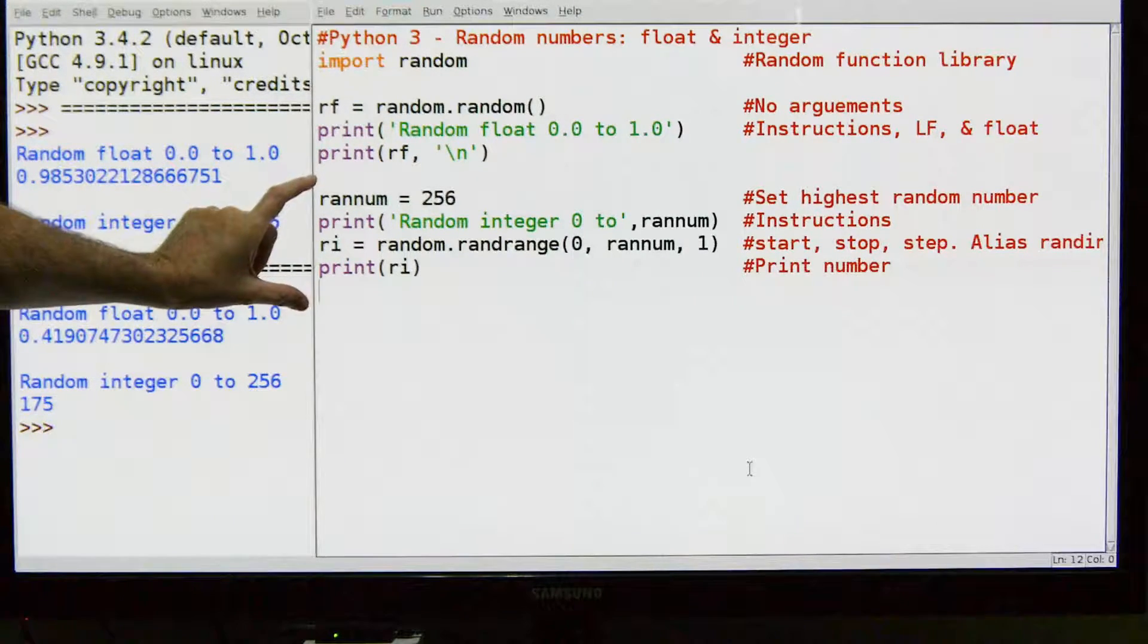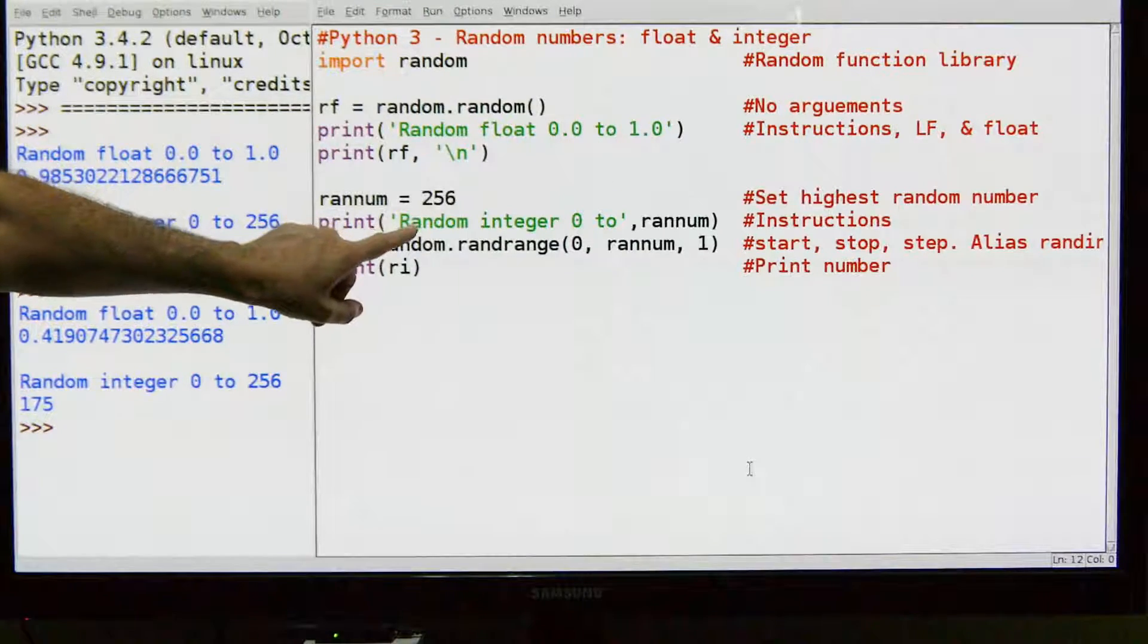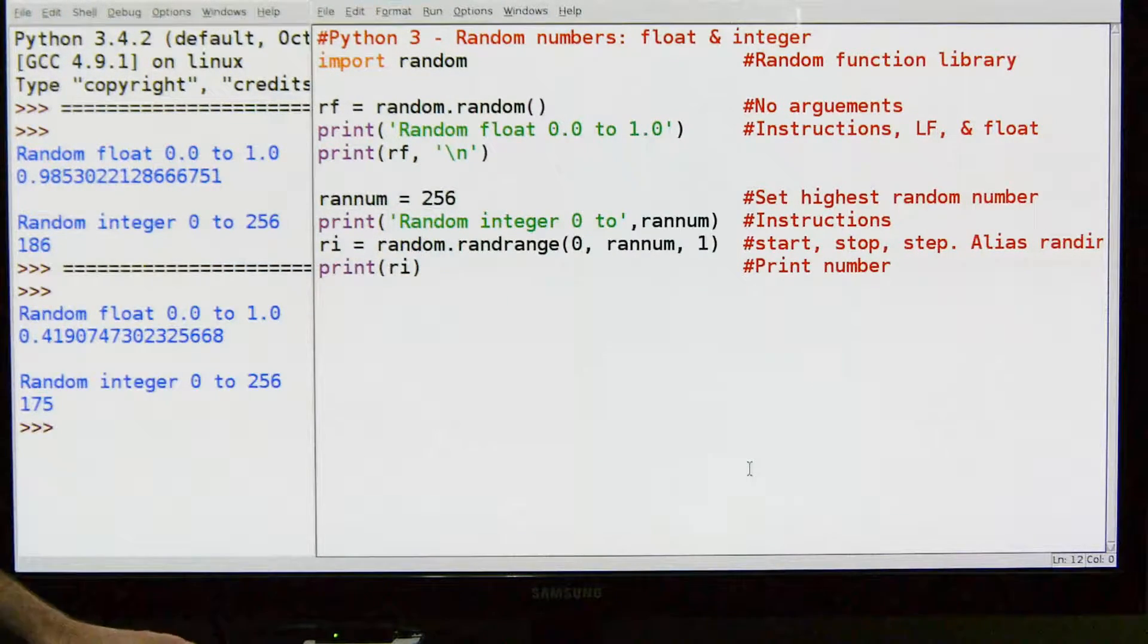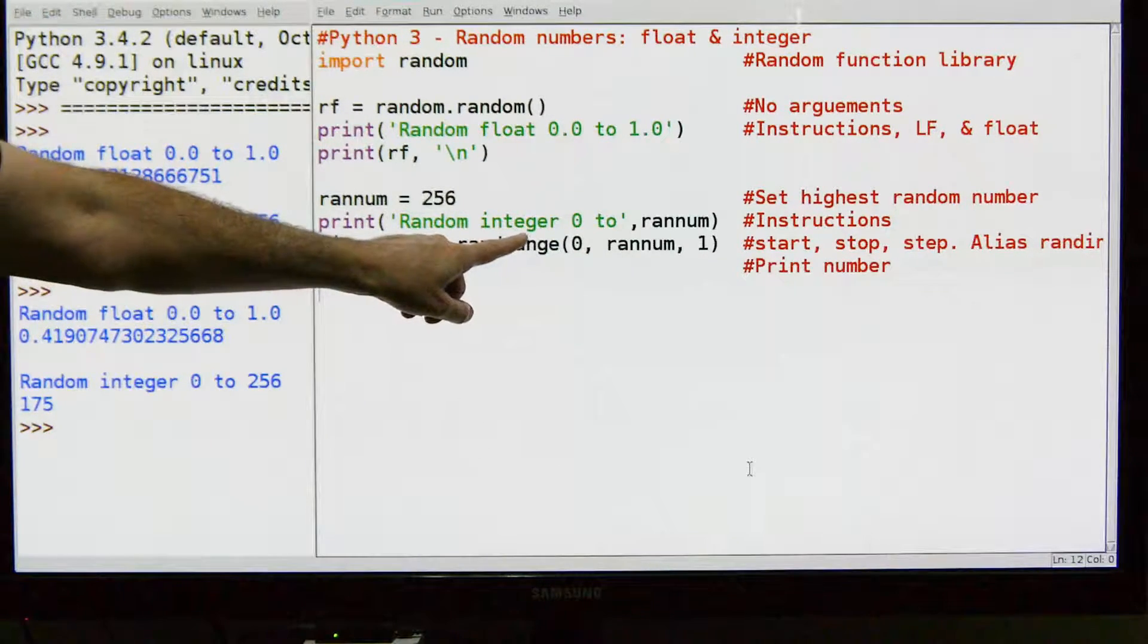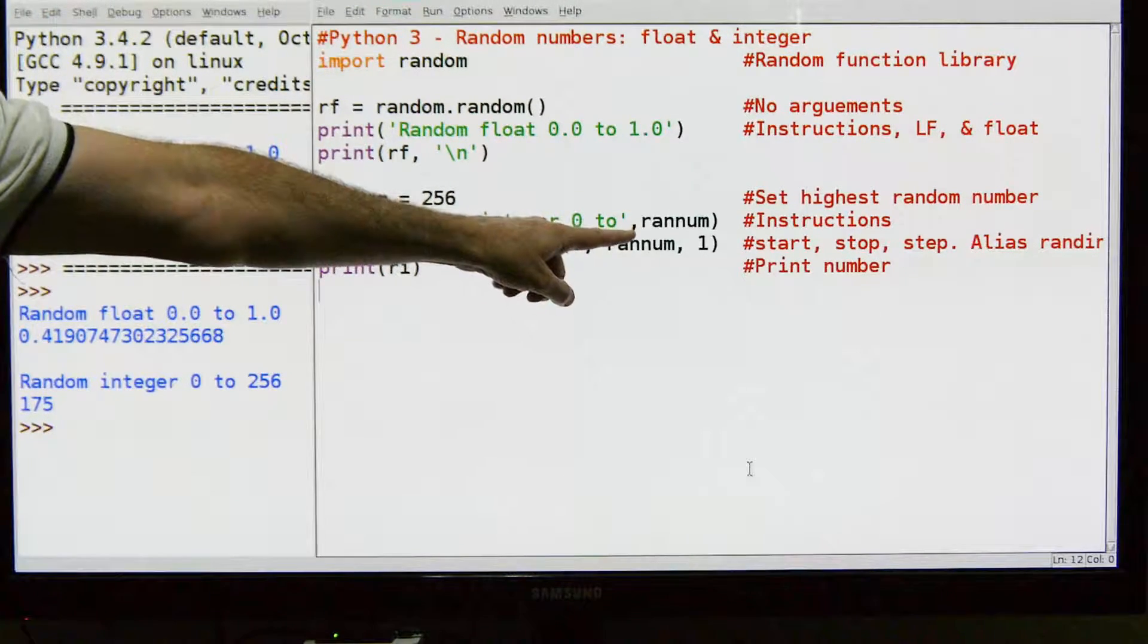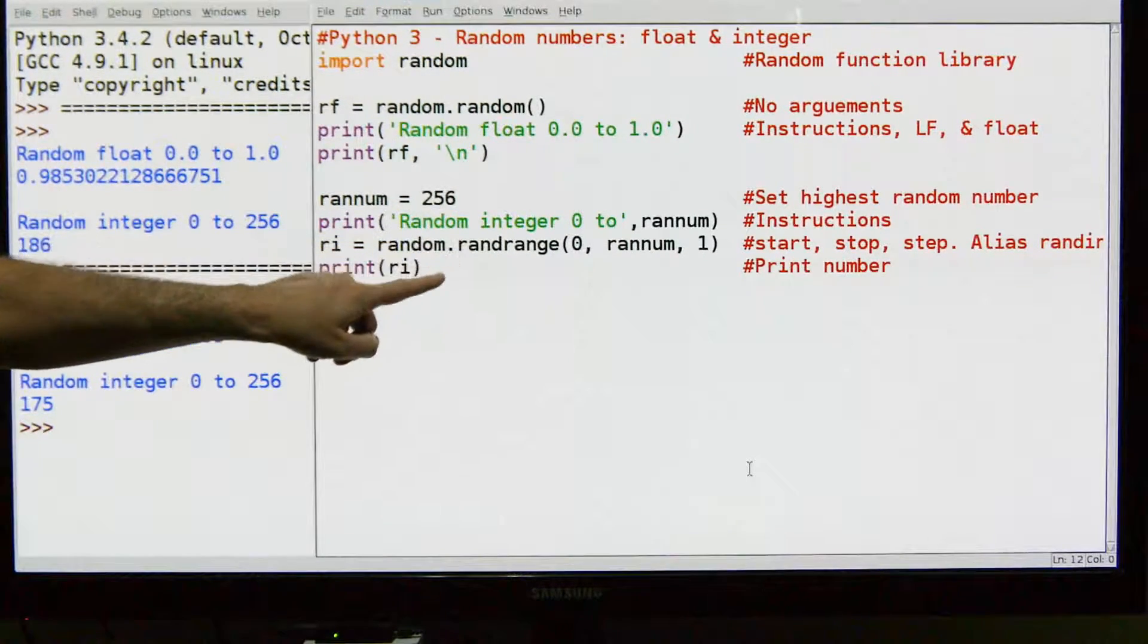For random integers, we're going to need to tell it what the maximum integer is, and in my case I just chose 256. We're going to print this little line that says random integer 0 to something, and that something is going to be our random number maximum, which is 256.